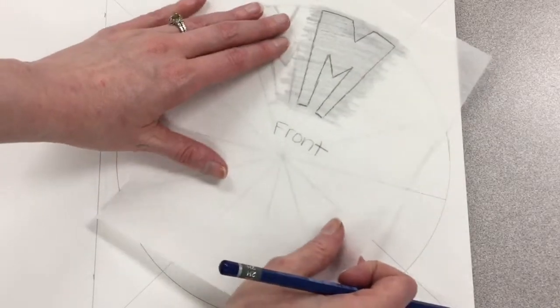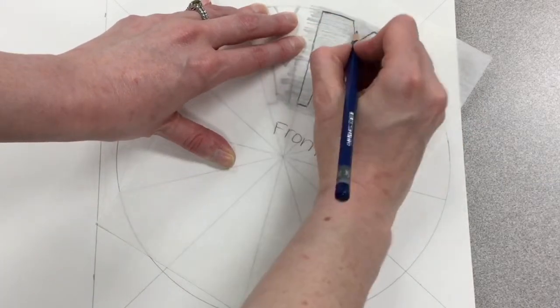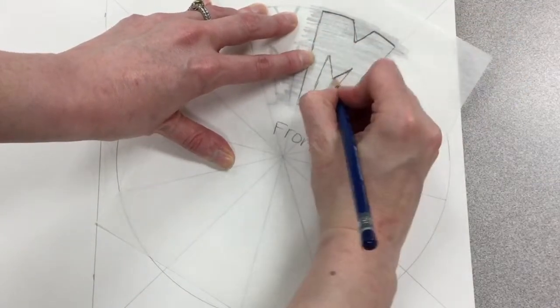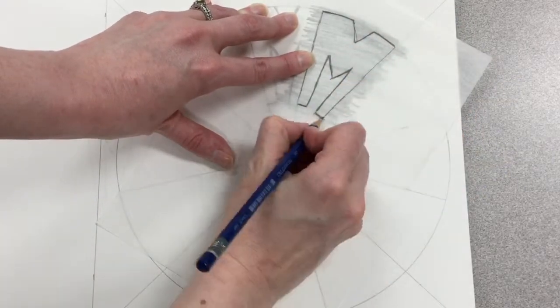Now I flip it back over so the front is up, and I lay it down inside the next section, and I just draw over my lines again, and I press down really hard with my pencil, and it will transfer my drawing.